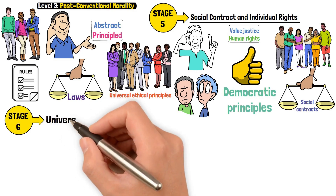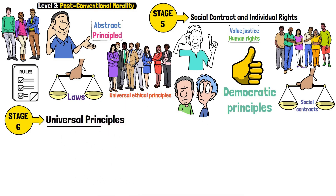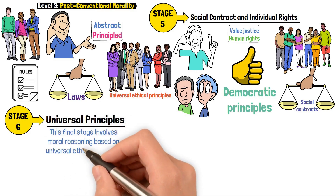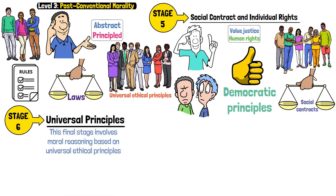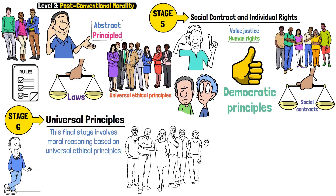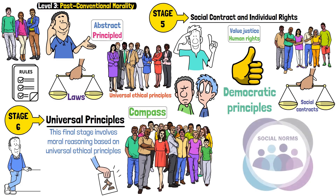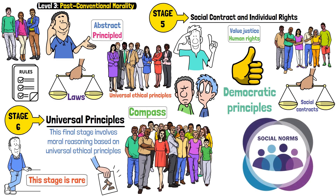Stage 6 – Universal Principles. This final stage involves moral reasoning based on universal ethical principles, such as equality and human dignity. People follow their internal moral compass, even if it conflicts with laws or societal norms. This stage is rare and seen in moral leaders who challenge unjust systems.